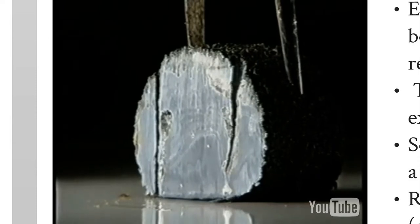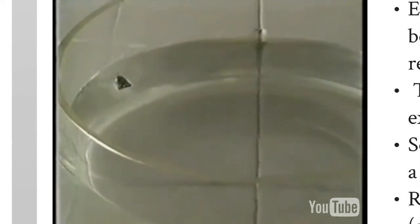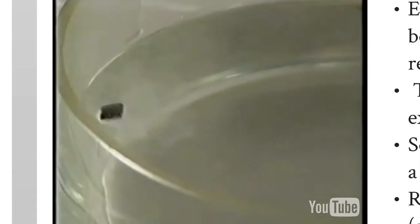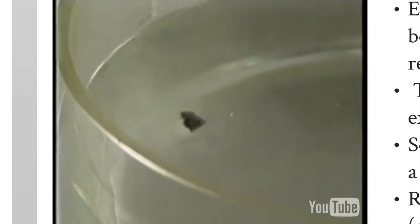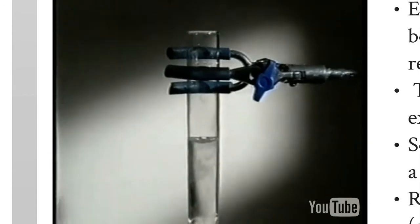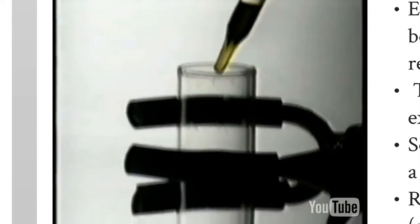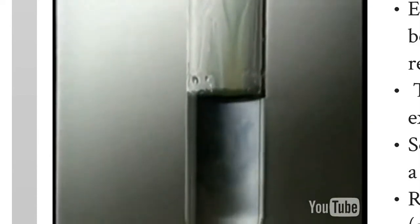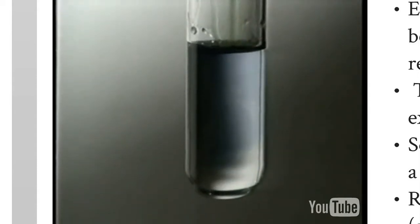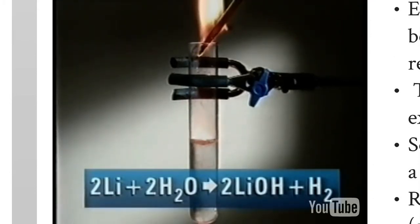Another way of comparing reactivity is to place the metals in water. Lithium floats and reacts immediately, fizzing and skating around on the water, which is evidence that a gas is being produced. By carefully putting a tiny amount into a boiling tube, the gas can be tested with a lit splint. A squeaky pop means it's hydrogen. Universal indicator shows that at the end of the reaction the solution is alkaline. Lithium reacts with water to form lithium hydroxide and hydrogen.